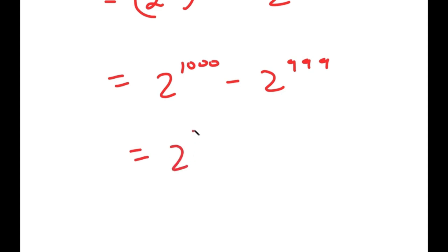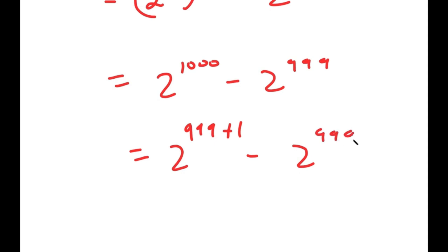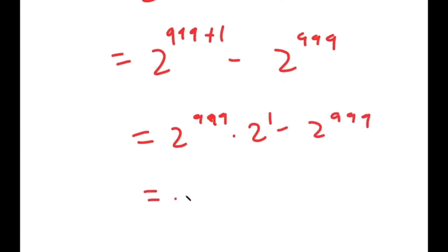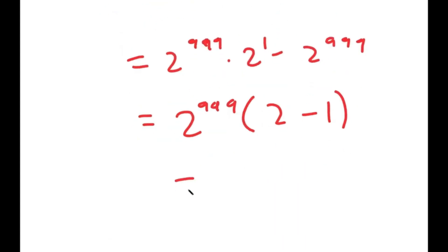Now to solve this, I'm going to write 2 to the power of 1000 as 2 to the power of 999 plus 1. So I get 2 to the power of 999 times 2 to the power of 1 minus 2 to the power of 999, which is equal to 2 to the power of 999 times 2 minus 1, which is equal to 2 to the power of 999.